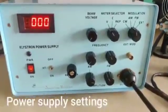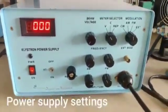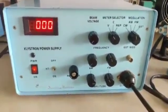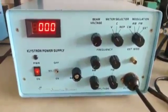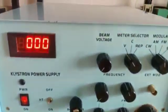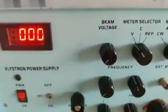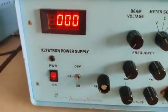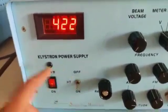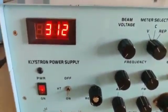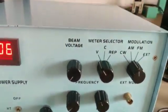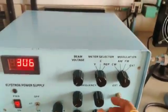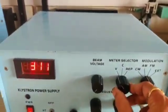Before going to the experiment, we should know the power supply general settings. Here, the beam voltage should always be minimum, and the repeller should always be maximum. This HT should be on. Now here in meter selection, first it should be in voltage.